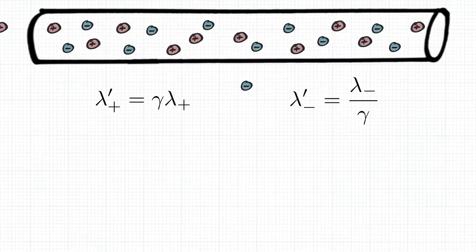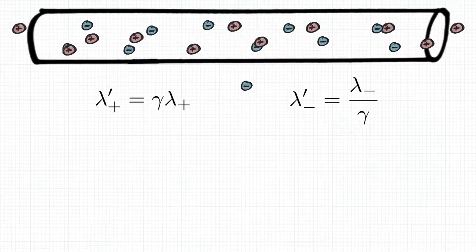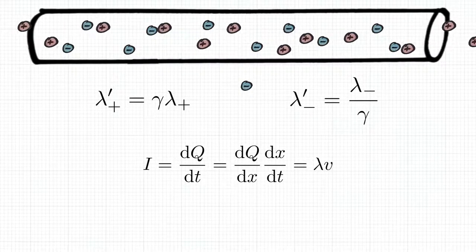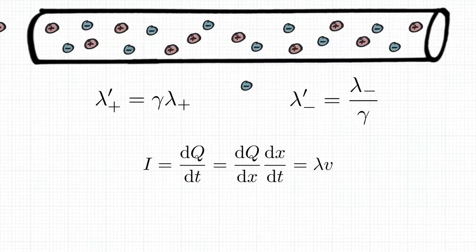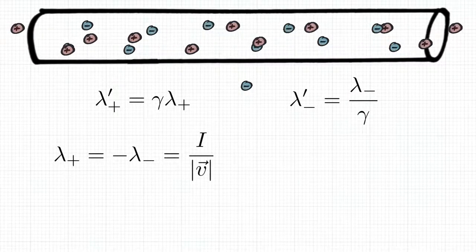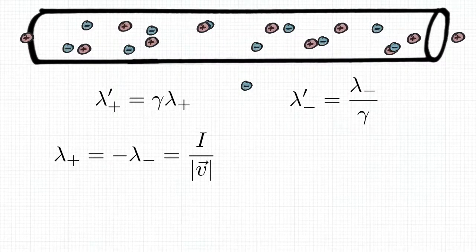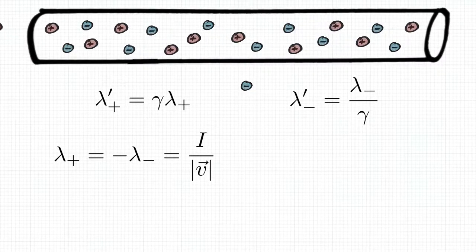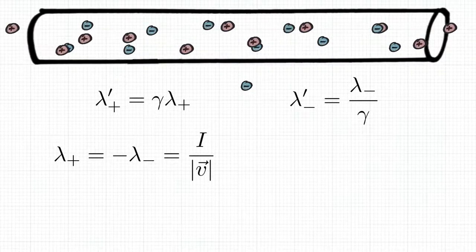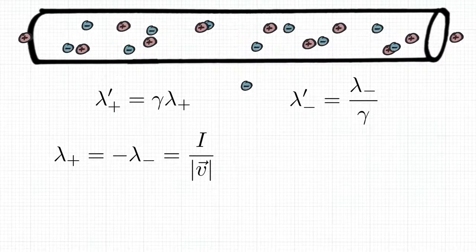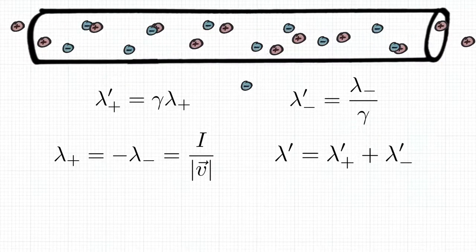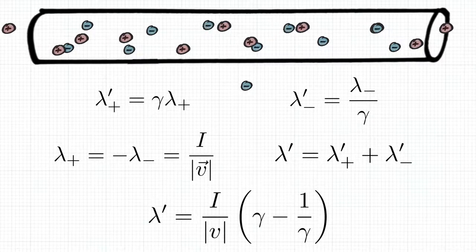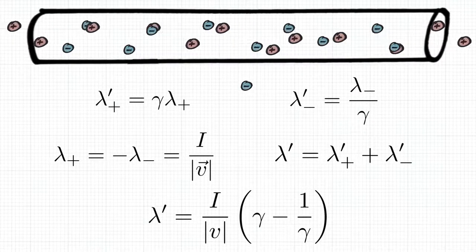Primed quantities are descriptions within the second frame of reference, the rest frame of the electron, with which we are dealing right now. And lambda is a symbol I chose for the line charge density, in other words charge per unit length. In the previous frame of reference, it was true that lambda plus equals minus lambda minus, which is I over V. So positive and negative line charge had the same absolute value and opposite signs, since the conductor was neutral. But now in the rest frame, there is a net charge lambda prime, which equals lambda plus prime plus lambda minus prime, which is I over V times gamma minus 1 over gamma.